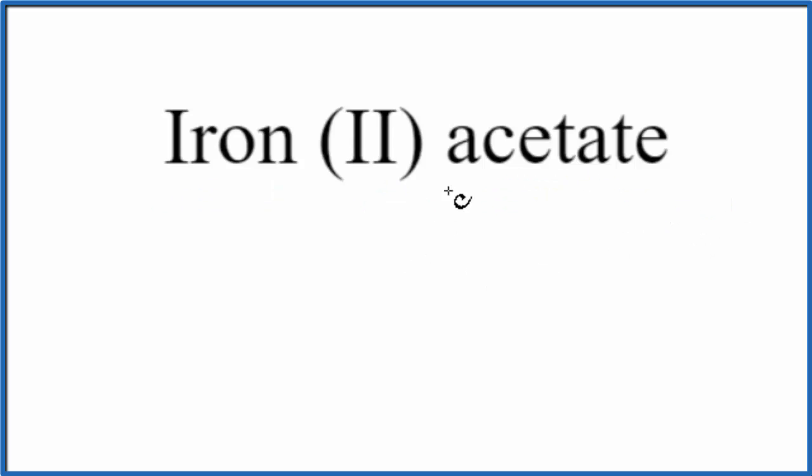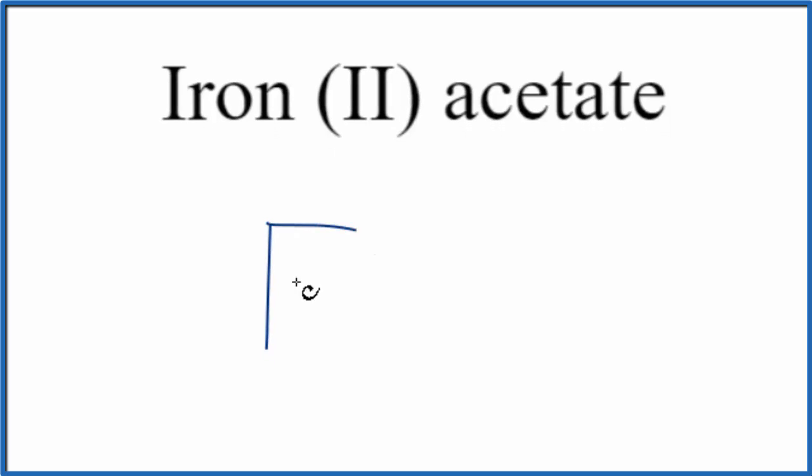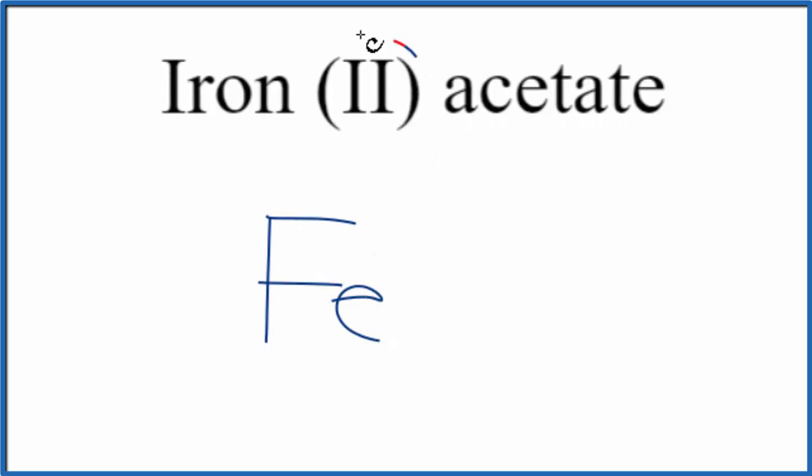So first off, let's write the element symbol for iron, Fe. We also know because of this Roman numeral 2, that iron is a transition metal, and it's going to have a 2 plus ionic charge.